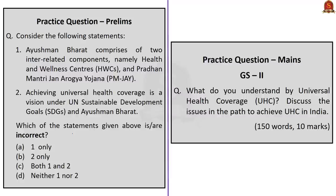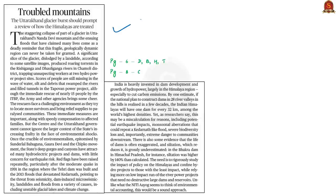Now let's move on to the analysis of the next news article. This editorial article talks about the recent glacial lake outburst that happened in Uttarakhand. Yesterday we extensively discussed about glacial lake outburst flood and its impacts, and also about the widespread devastation caused in Uttarakhand. In today's editorial the author discusses the unprecedented human encroachment and infrastructural development activities faced by the ecologically fragile Himalayan region.